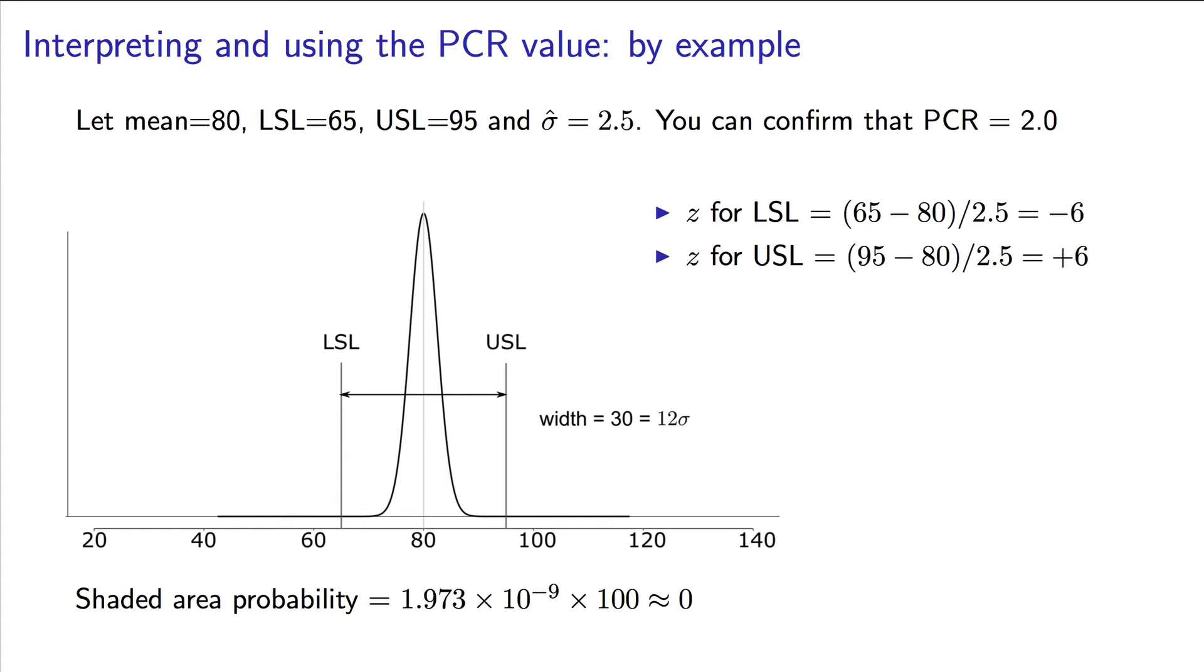It is a measure of how capable our process is, how capable we are of staying within those limits. Remember, the process has a mean of 80, but it's never constant. That 80 will drift to the left and to the right. And sigma occasionally will get a little bit wider and sometimes narrower. No process is ever stable where those numbers stay exactly the same. So a high process capability ratio means that we've got the room to move within our lower and upper specification limits and still not produce bad product.